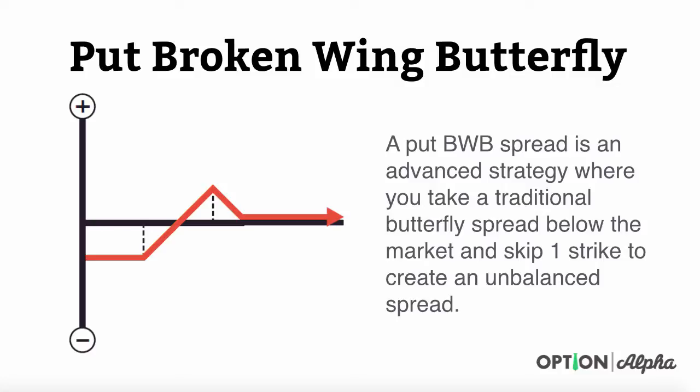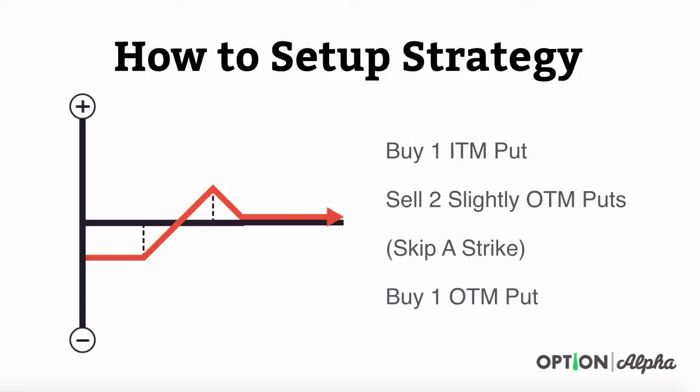This is an advanced strategy where you take a traditional butterfly spread below the market and you skip one strike to create an unbalanced spread. That's really what gives it its name — that broken wing side of the trade. It's not like a typical butterfly that has even or balanced wings; it's kind of skewing to one side.